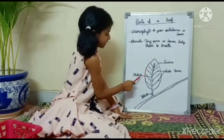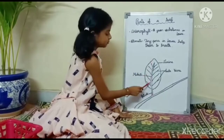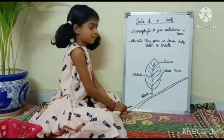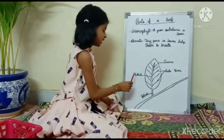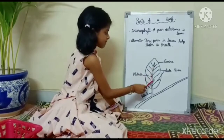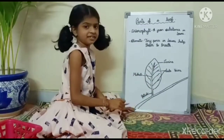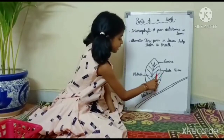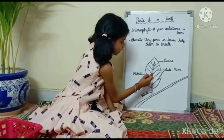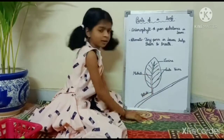The leaf has a petiole, which helps the leaves to connect to the stem. Next is the midrib. This is the midrib. It is also called the main vein. These are the side veins.